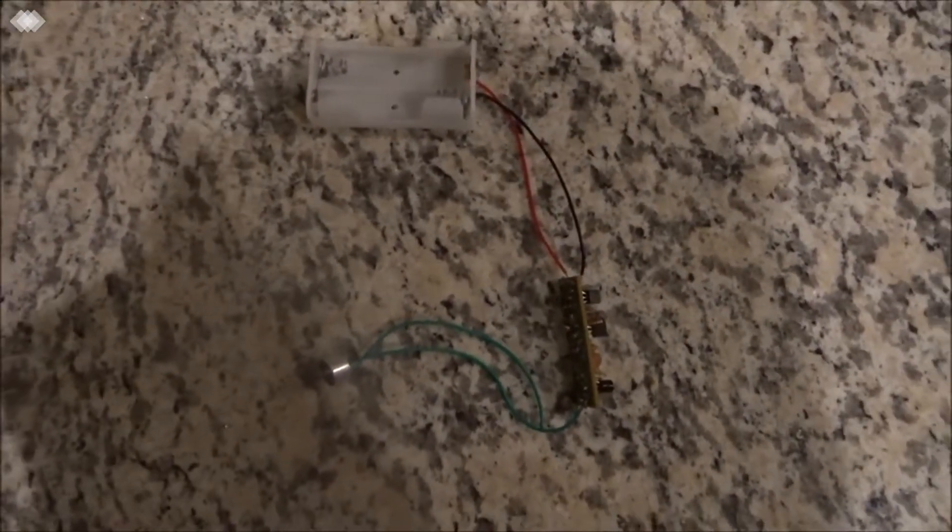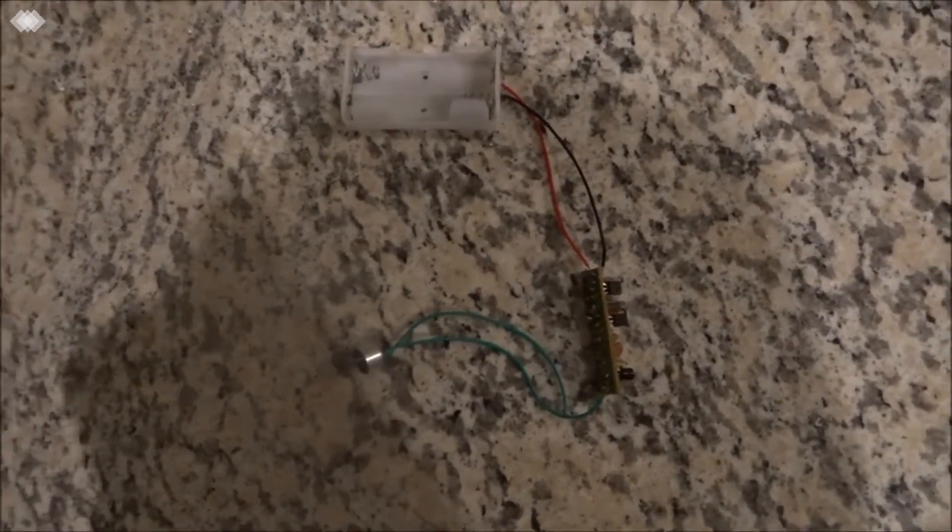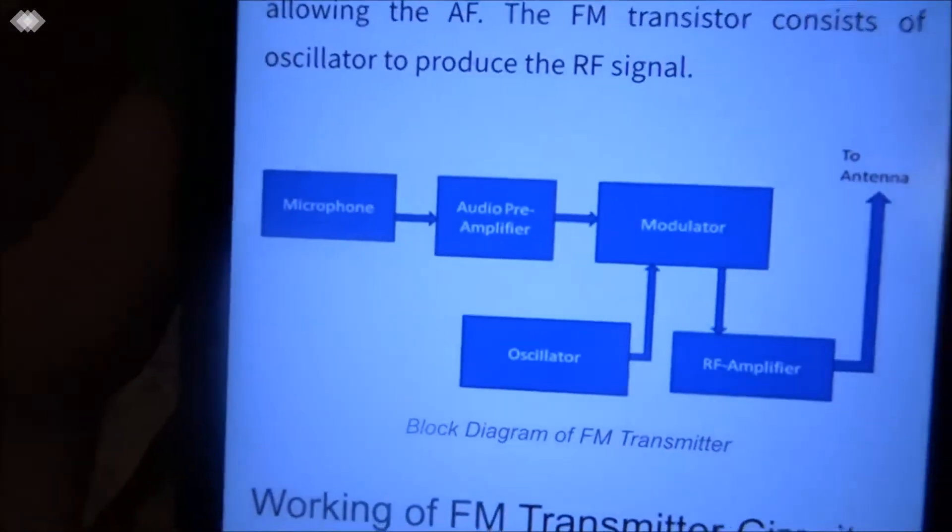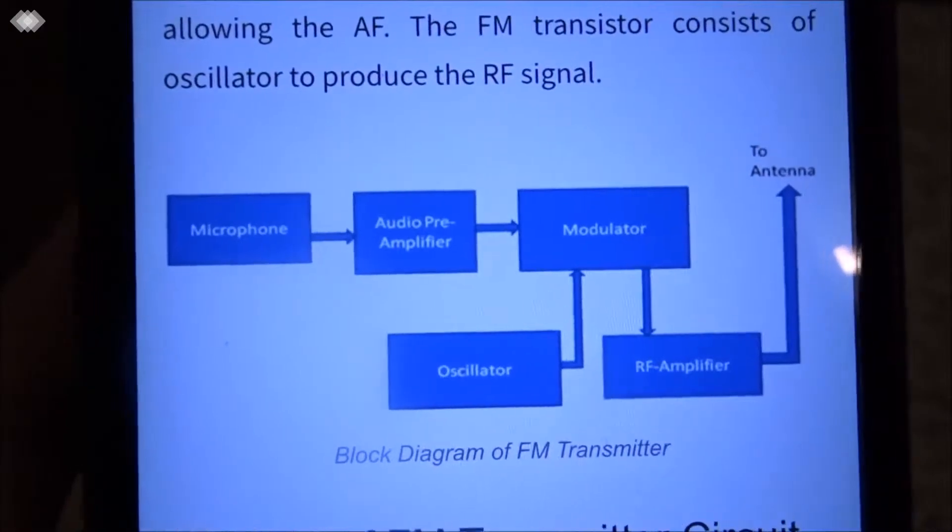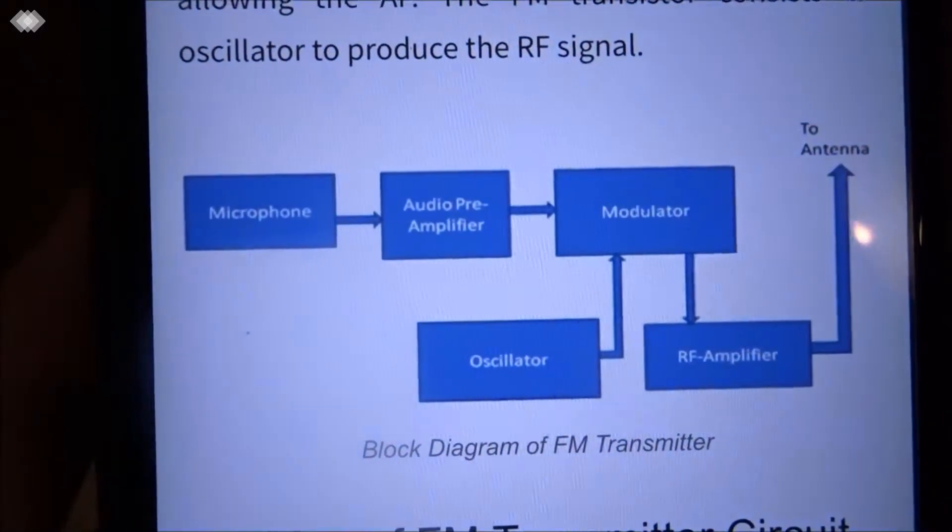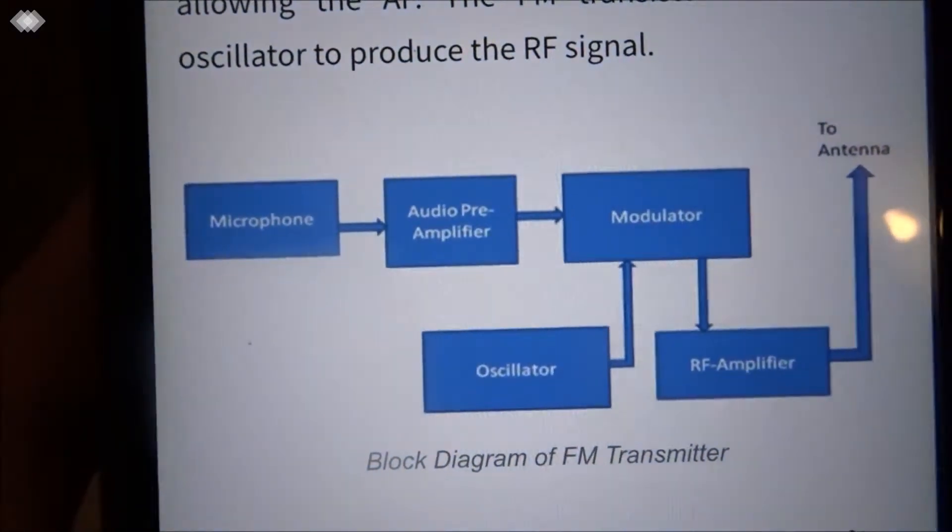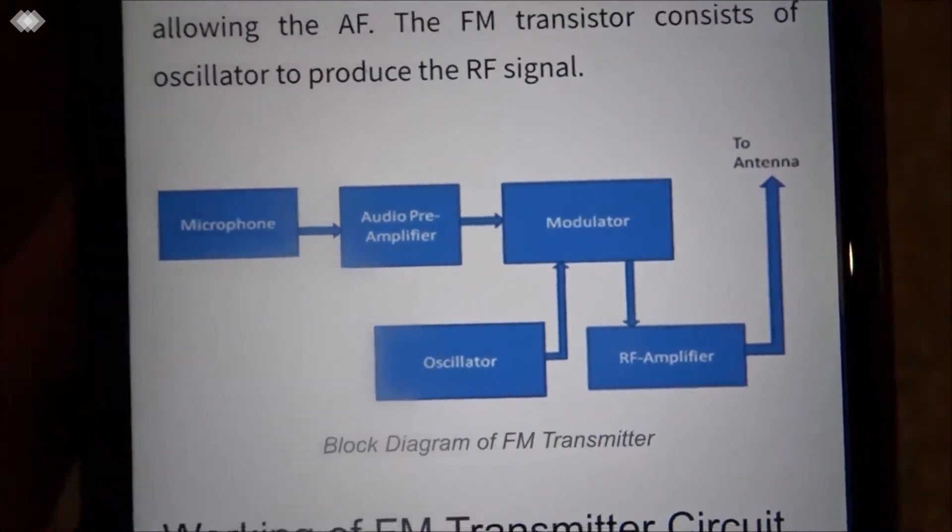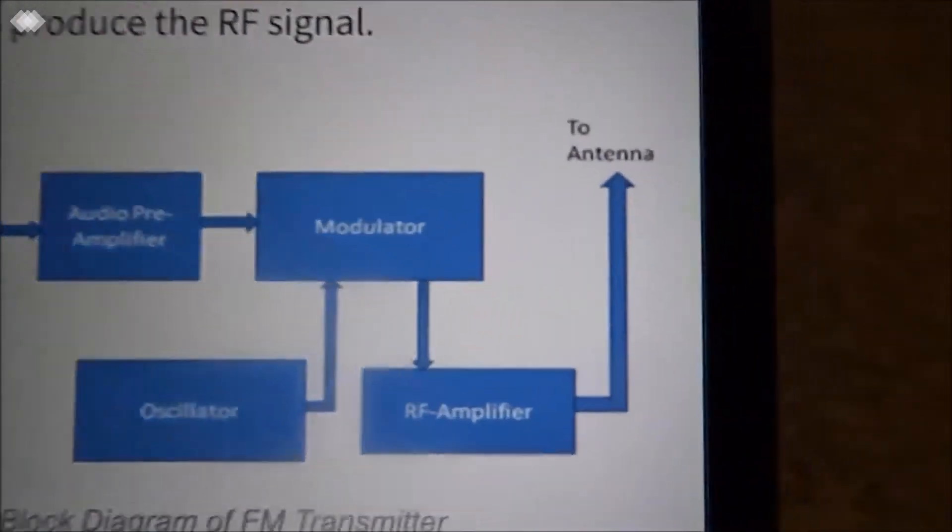Okay, so this is how my FM transmitter works. First we look at this block diagram. We have a microphone, audio pre-amplifier, modulator, oscillator, RF amplifier, and antenna.